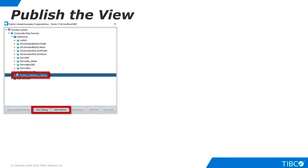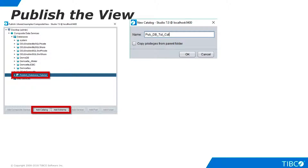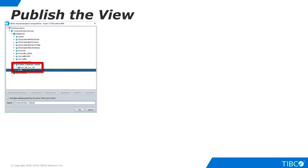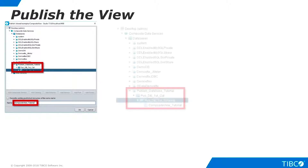Now the Add Catalog and Add Schema buttons are enabled. These are optional. However, if you want clients to connect via ODBC, be sure to define at least a catalog — the ODBC protocol requires a catalog to be present. For this example, we'll define a catalog and a schema. The catalog and schema are added to the virtual database. Optionally, you can change the name of the published view. Click OK and the view is added to the schema.